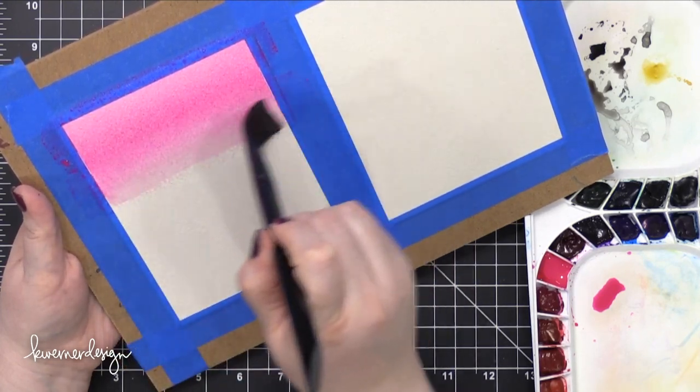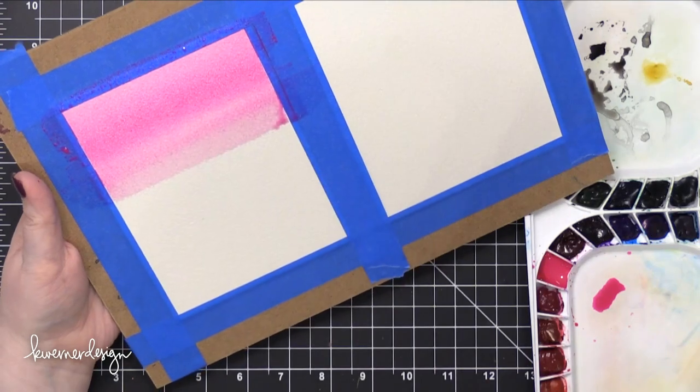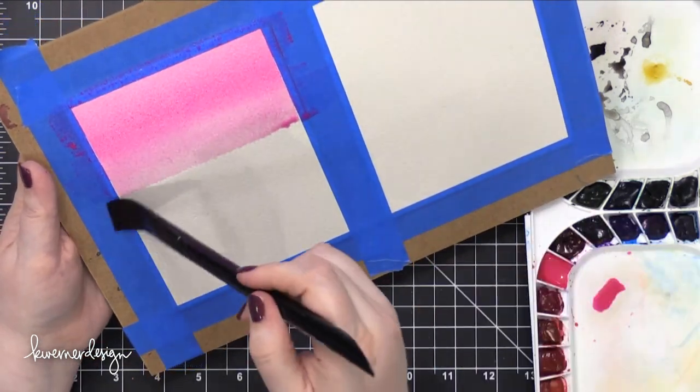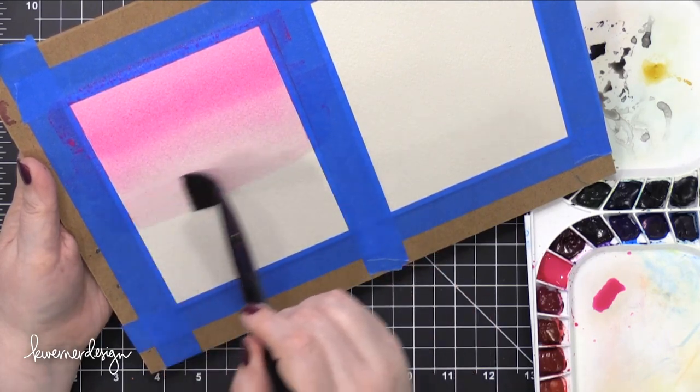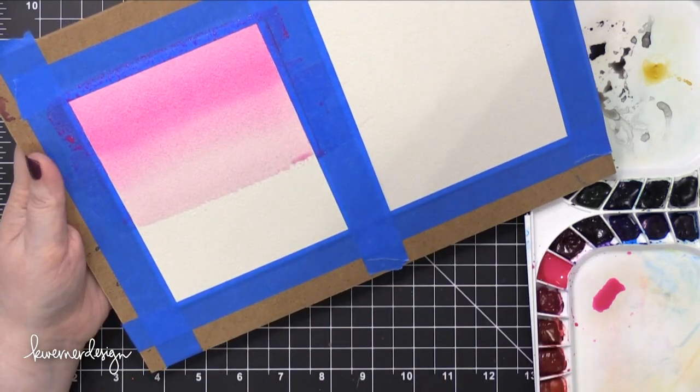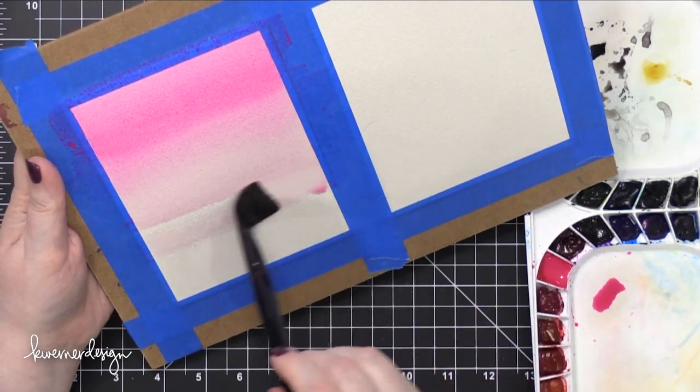And then I dipped my brush in clean, clear water. And then without drying it off or anything, I just brought it straight back to my watercolor paper and then continued painting all the way down to the bottom of my watercolor paper.